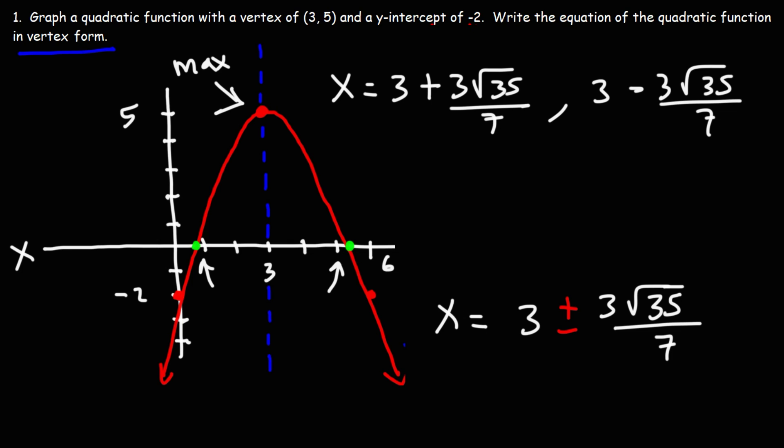Go ahead and plug in both numbers in your calculator. And let's turn this into a decimal. So for the first one, I got 5.535. And for the second one, I got 0.4645.